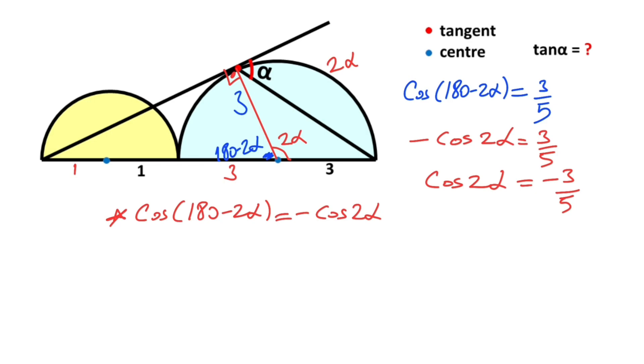The expansion of cos(2α) equals 1 - 2sin²α. If you plug in this value to the equation, so 1 - 2sin²α equals -3/5.